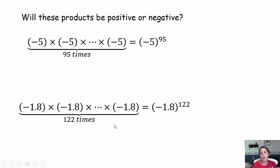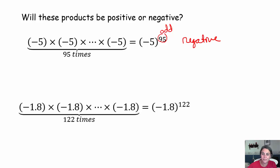Will these products be positive or negative? Pause the video, try it out, come on back. Negative base raised to an odd exponent — 95 is odd — that will be a negative answer. Negative base raised to an even exponent — that answer will be positive.